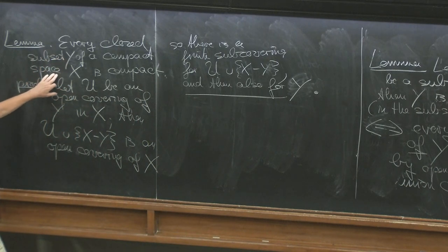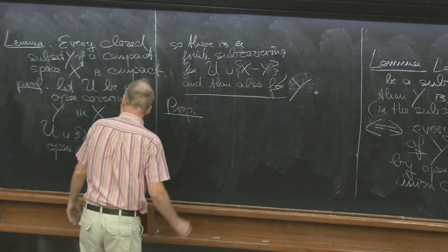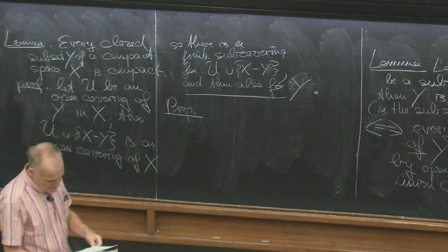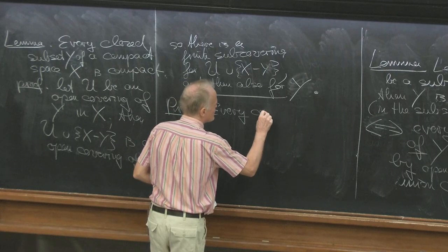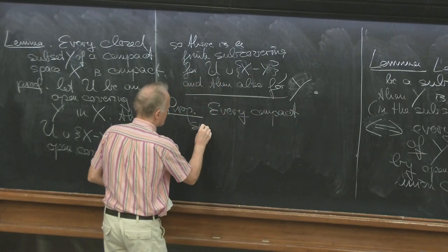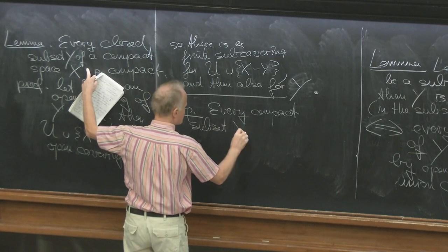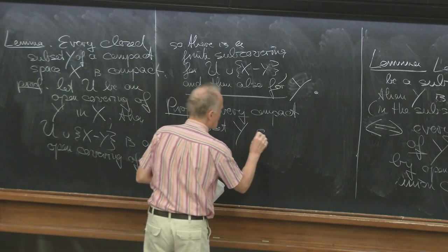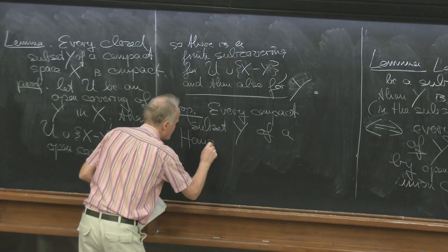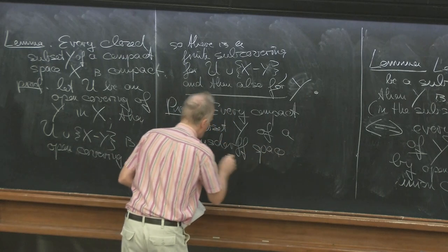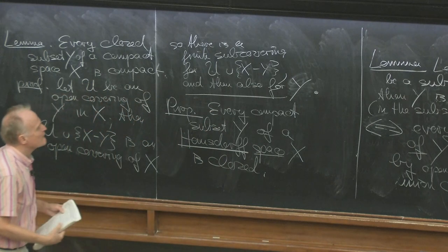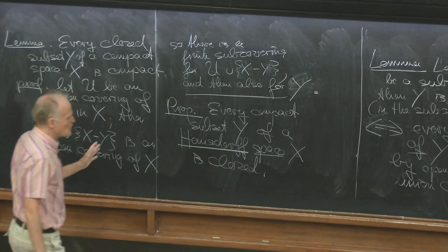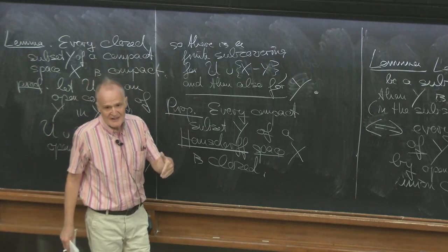So closed subsets of compact are compact. Compact is not closed, unfortunately. But here's a proposition: if you are in a Hausdorff space, then it's okay — every compact subset of a Hausdorff space is closed. In many books, compact includes Hausdorff; in Munkres, compact does not include Hausdorff.